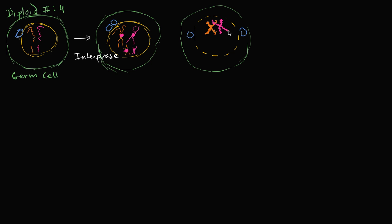So this is the one from the mother, and this is the one from the father. I'll draw the centromere in blue. Now these are the shorter ones from the father, and these are the shorter ones from the mother. I drew them on opposite sides just to show that the ones from the father aren't always on the left-hand side. Each of these is a homologous pair. The DNA has been replicated, so in each chromosome in a homologous pair you have two sister chromatids — meaning in the entire homologous pair you have four chromatids. This is sometimes called a tetrad.